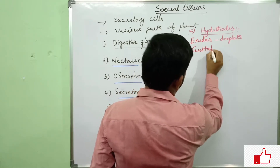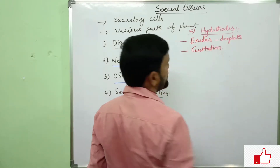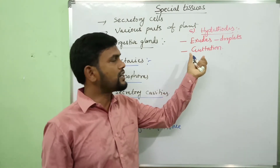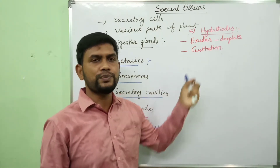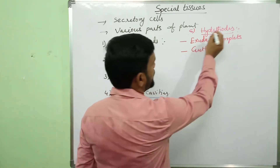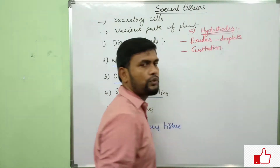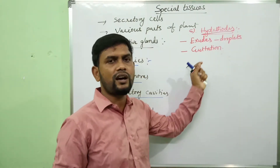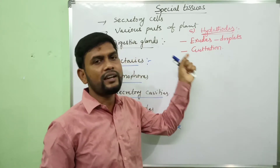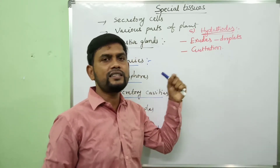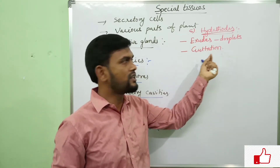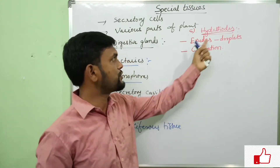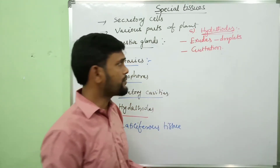Guttation is due to the activity of a special tissue or special gland called hydathode. Due to the presence of hydathodes in the leaf margins or leaf apex, water is released in the form of droplets. This process is called guttation.